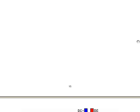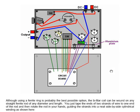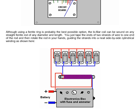Although a ferrite ring is probably the best possible option, the bifilar coil can be wound on any straight ferrite rod of any diameter and length. You just tape the ends of two strands of wire to one end of the rod and rotate the rod in your hands guiding the strands into a neat side-by-side cylindrical winding as shown in this diagram. So the red wire from the plus and the blue wire from the rest of the circuit are wound side-by-side touching each other along in this case a 3/8 inch or 8 millimeter ferrite rod and that's the way that the arrangement works for this particular build of the components. The list of the components used are shown in the table and Dave who built this replication suggests various improvements.